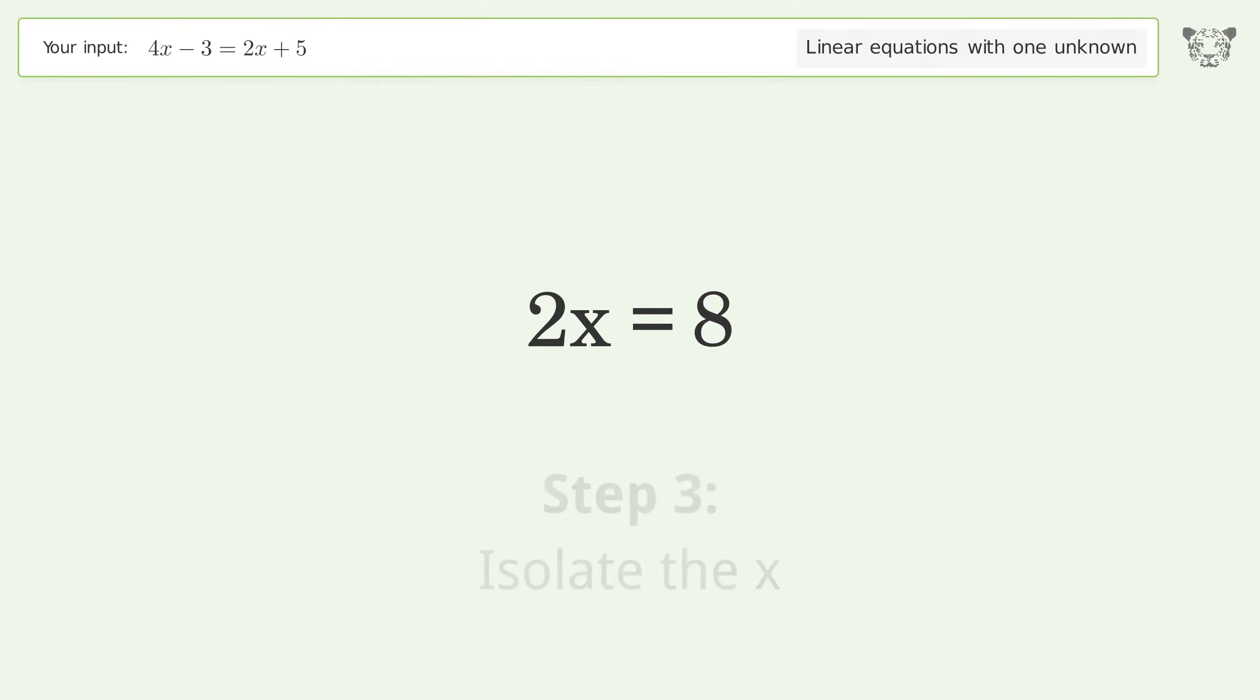Isolate x by dividing both sides by 2. Simplify the fraction.